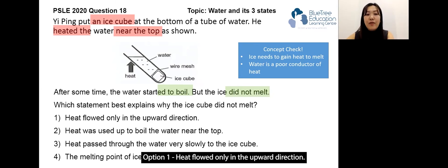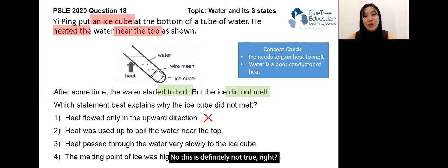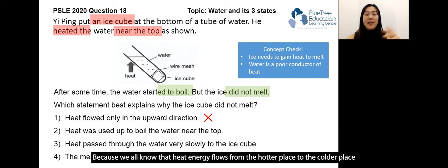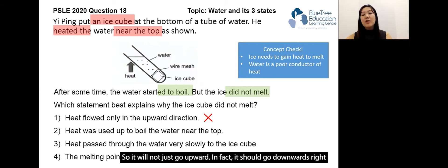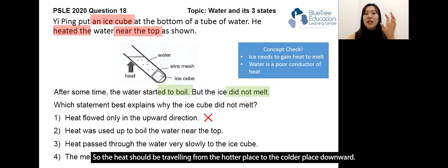Option one: heat flows only in the upward direction. Is this true? No, this is definitely not true, because we all know that heat energy flows from the hotter place to the colder place — it will not just go upward. In fact, it should go downwards because the heat is focused on the top area, so the heat should travel from the hotter place to the colder place downward.